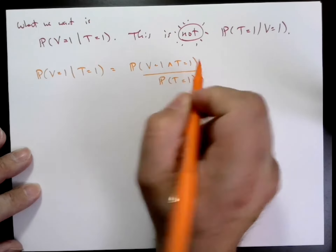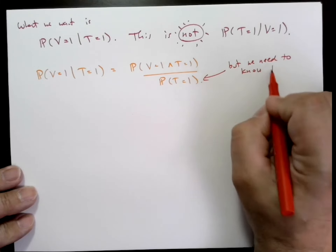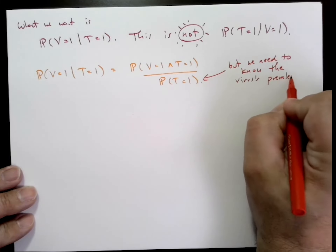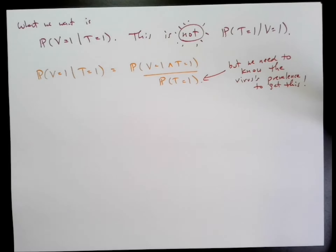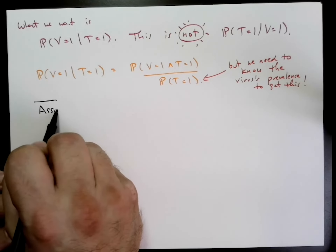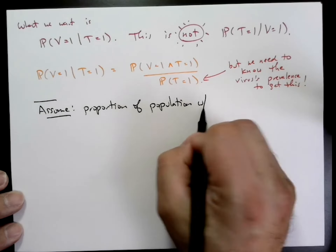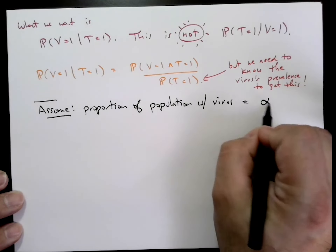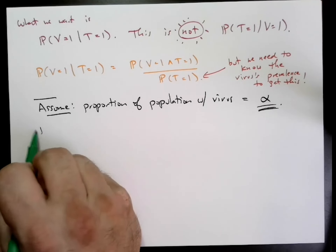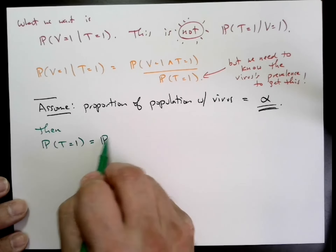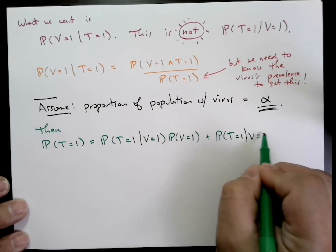So let's go from the definition. The probability that V equals one given T equals one is the probability that V equals one and T equals one, divided by the probability that T equals one — just by definition. But how do we get that denominator? We can't get it unless we know how common the virus is. So let's assume that the proportion of the population with the virus is alpha, some number between zero and one. Then to compute the probability that T equals one, we'll use the law of total probability.